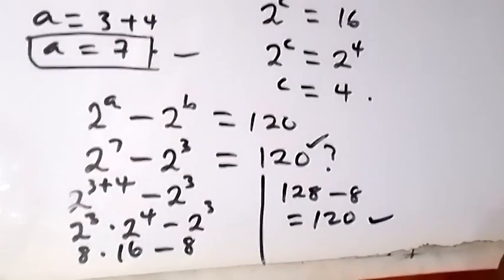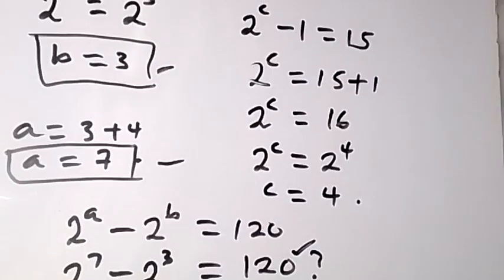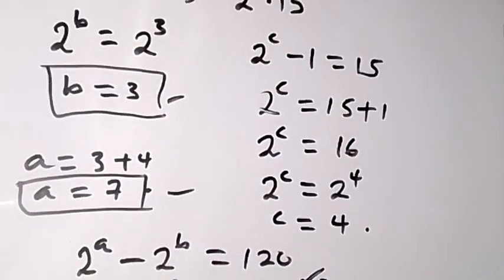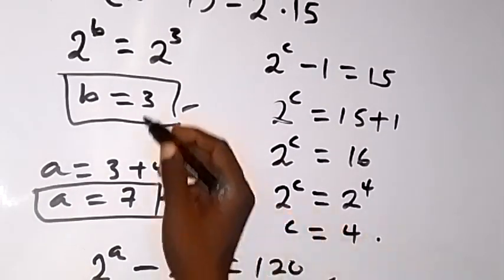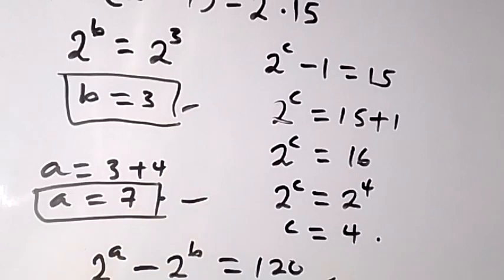Therefore the value of a is 7 and b is 3. Thank you for joining us. Subscribe to this channel for more videos. See you in the next class, bye for now.